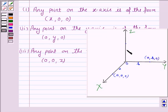And similarly, if this distance is c, then the coordinates of this point will be (0, 0, c).